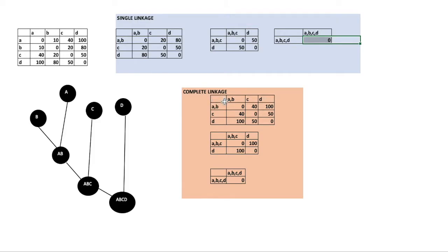Now for complete linkage, the process is the same but we need to find the maximum distance. The first step is always to find the nearest closest pair of points, which is A to B at 10, so we merge AB. Now from A to C the distance is 40 and from B to C is 20. Because this is complete linkage, we need to find the maximum distance, which is A to C at 40.